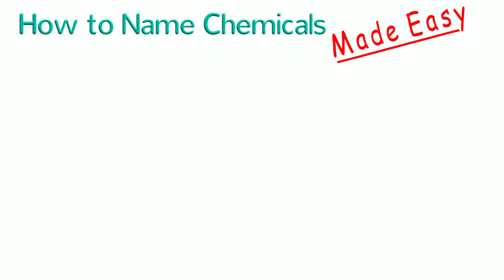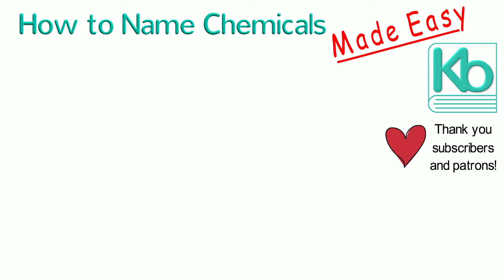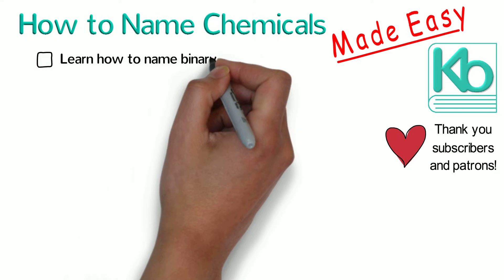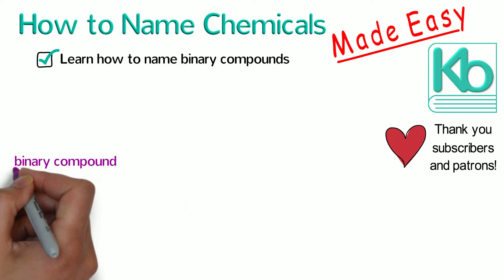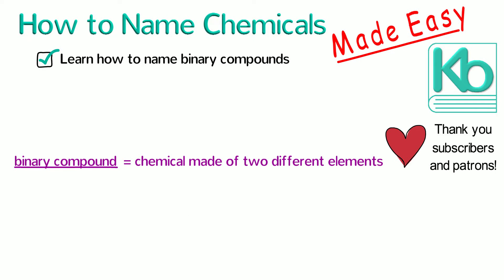How to Name Chemicals Made Easy, brought to you by Ketsbook. Welcome back and thanks to all my subscribers and patrons for making this video possible. In this video, we're going to learn how to name binary compounds. A binary compound is a chemical made of two different elements, so naming binary compounds is the first step in learning how to name any chemical.